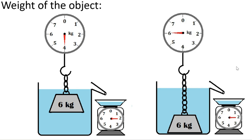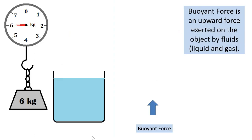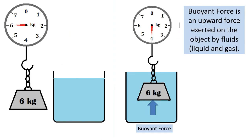Why is that so? When the object is suspended in the water, there is a force exerted by the water, and that force is what we call the buoyant force. Buoyant force is an upward force exerted on the object by fluids — either liquid or gas.